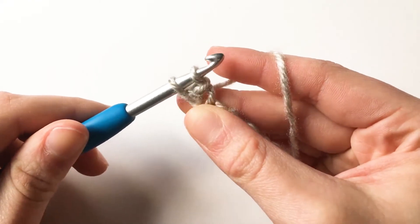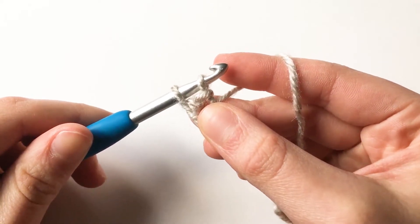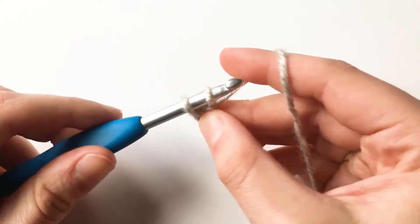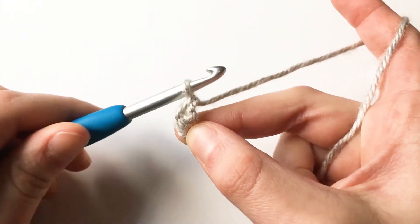So you should have two loops on your hook, and as you can see, this creates that little bar which is going to be on the bottom of the stitch. Then yarn over and pull through the last two loops.